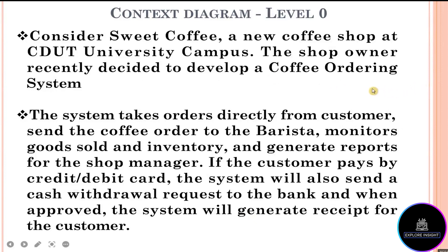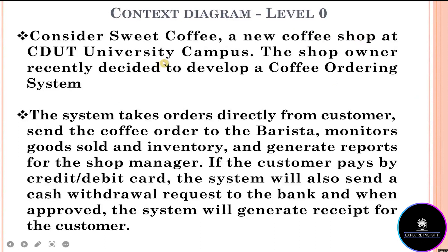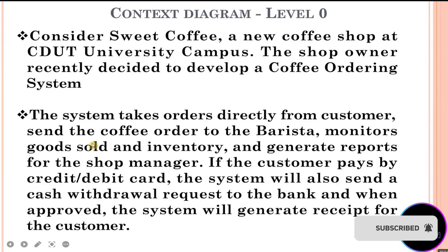To draw a context diagram, we need to identify that we have a system, and we need to know who will work with the system — which is referred to as the external entity. In drawing the system, we need one of the DFD components; in this case we'll be using the process component. Do watch my first video where I vividly explained the different components of a data flow diagram. Now let's go ahead and identify the external entities.